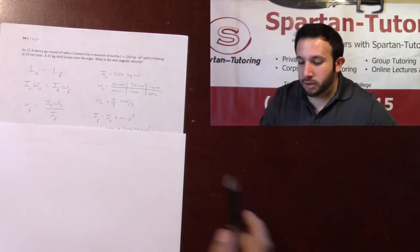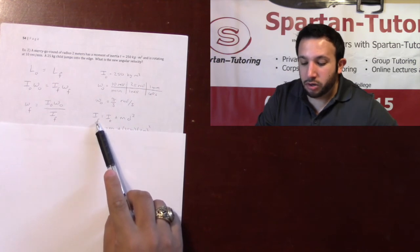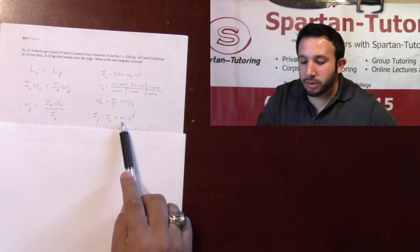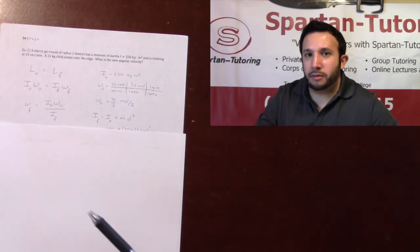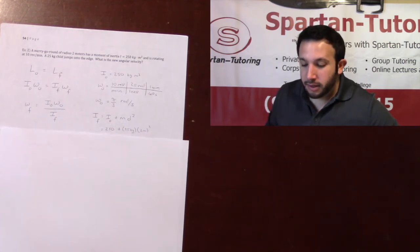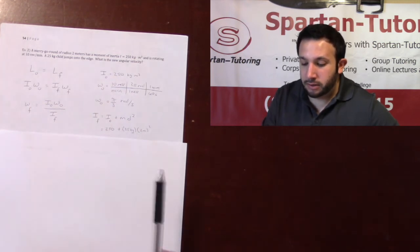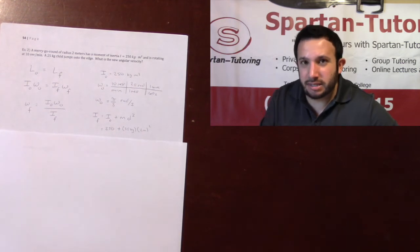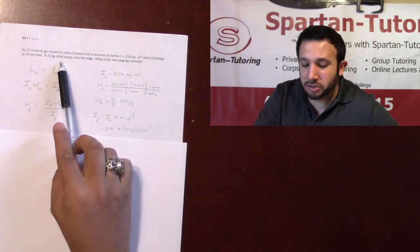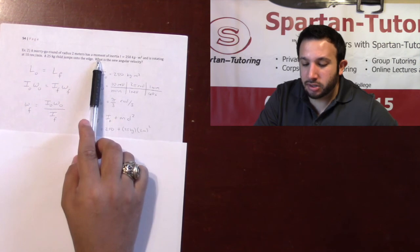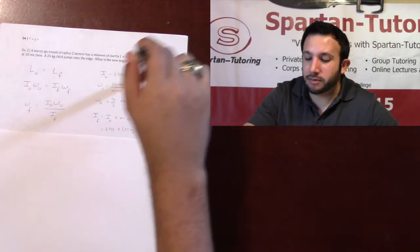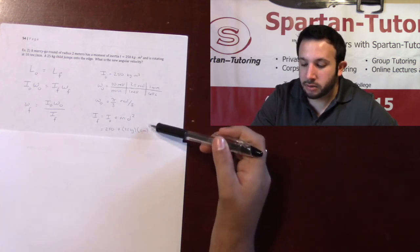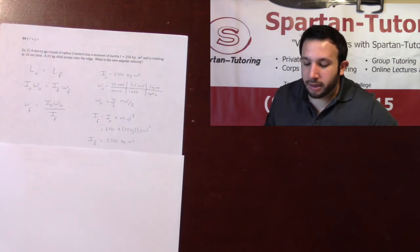And if you remember from the previous video, parallel axis theorem, your new moment of inertia was your old moment of inertia plus md squared, where that md squared is the md squared of that child. And so, the old moment of inertia was 250. The md squared, the mass of the child, was 25. d, the distance from the axis of rotation. They said that the child jumped onto the edge, which means the distance from the axis of rotation would be that radius. And so, that's why that's at 2 meters squared. And that comes out to 350.